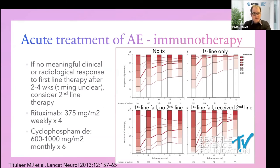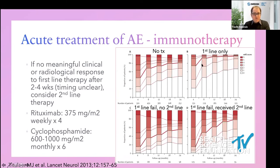Plasma exchange involves five to ten sessions every other day and is sometimes combined with other first-line therapies. The data show that patients who receive first-line treatment — steroids, plasma exchange, or IVIG — improve significantly compared to no treatment. Even patients with milder presentations who receive no treatment can show some improvement, but there is really no reason not to treat someone. First-line treatment and response should be evaluated before escalating.